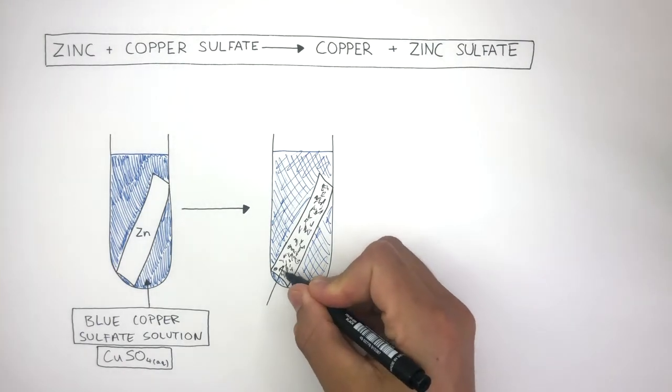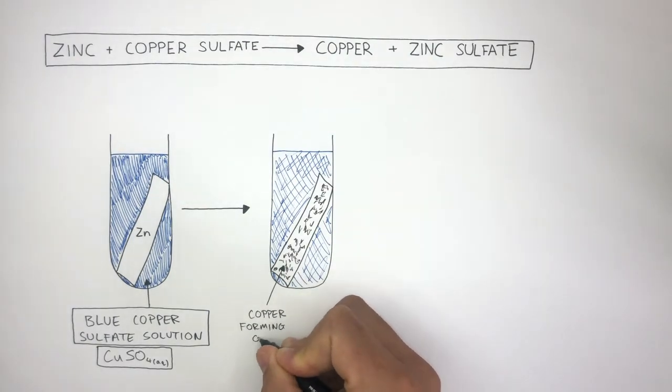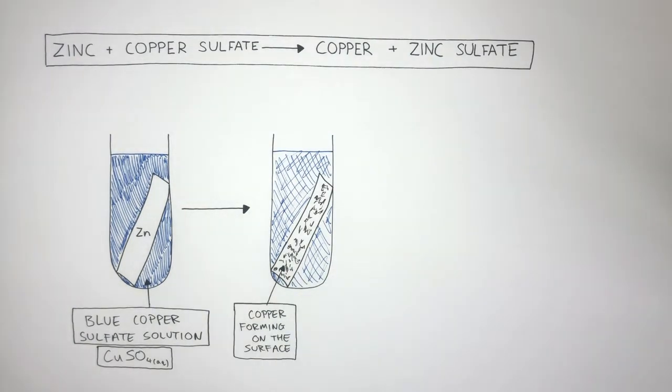This diagram shows how the copper is forming on the surface of the zinc. This happens because the zinc displaces the copper from copper sulfate, causing the copper to then form on the surface of the zinc.